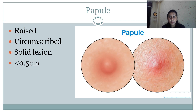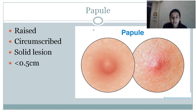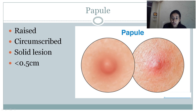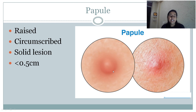Coming to the second — papule. What is a papule? These are raised, circumscribed, solid lesions of less than 0.5 cm. You can look at this picture — these are raised lesions. When you feel or palpate the lesion, they are raised. They are circumscribed and solid lesions, and they are less than 0.5 cm.